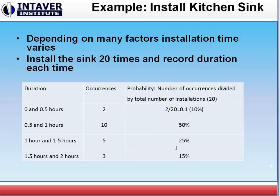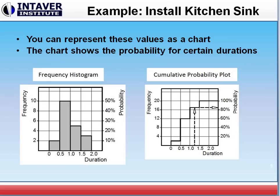From these values that we get, we can build these charts. These are very common charts that we see in schedule risk analysis: a frequency histogram or probability chart and a cumulative probability chart. On the frequency histogram from those values we had, we completed it two times in this time frame, ten times in this time frame, five times between an hour and an hour and a half, and again three times.